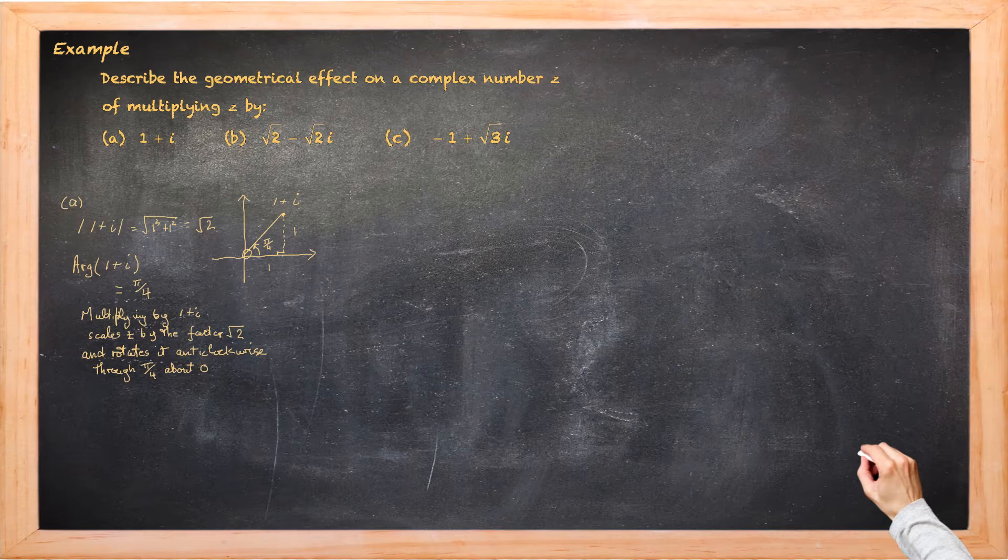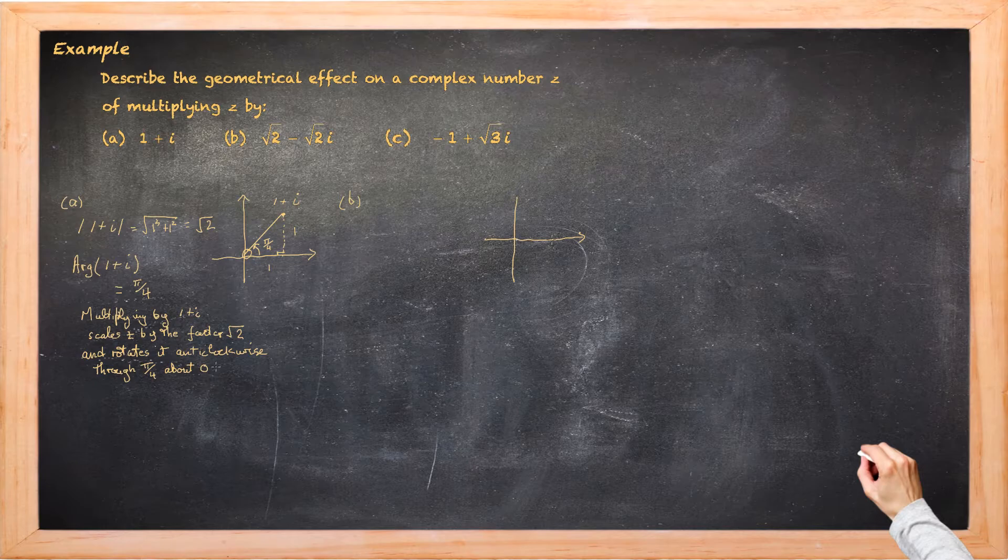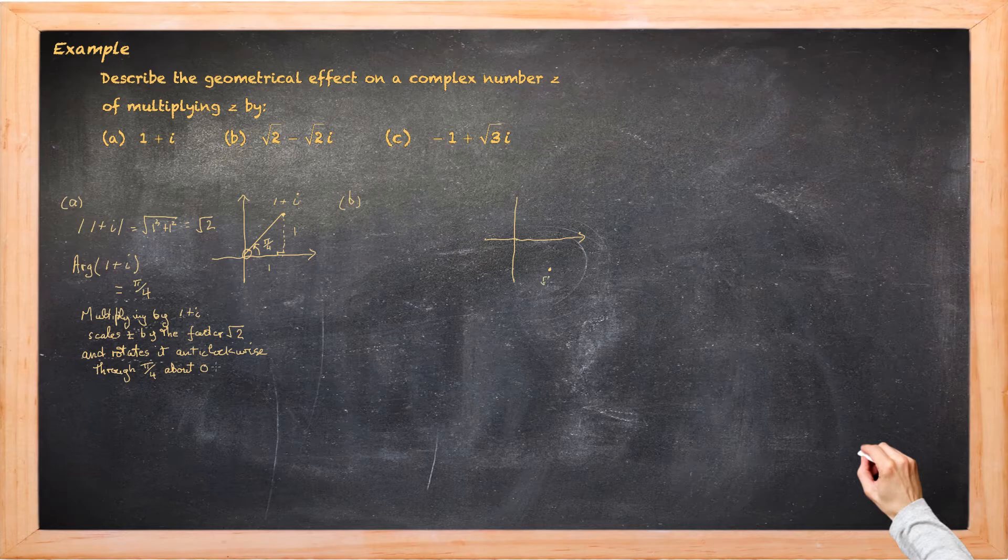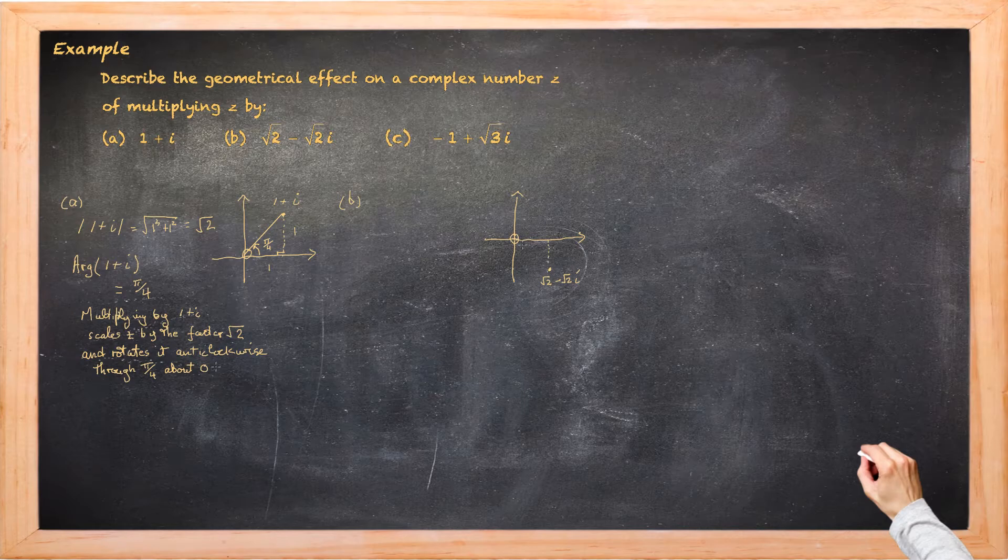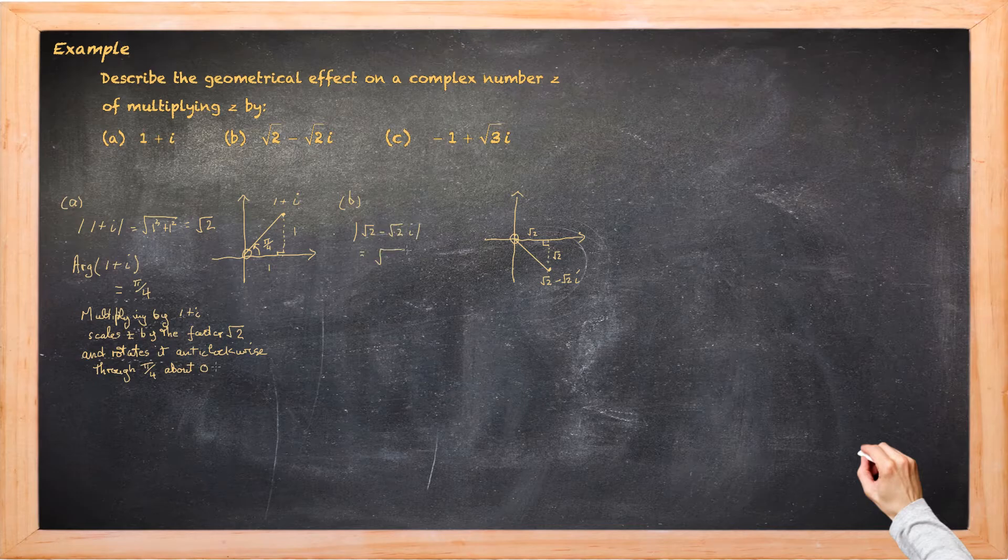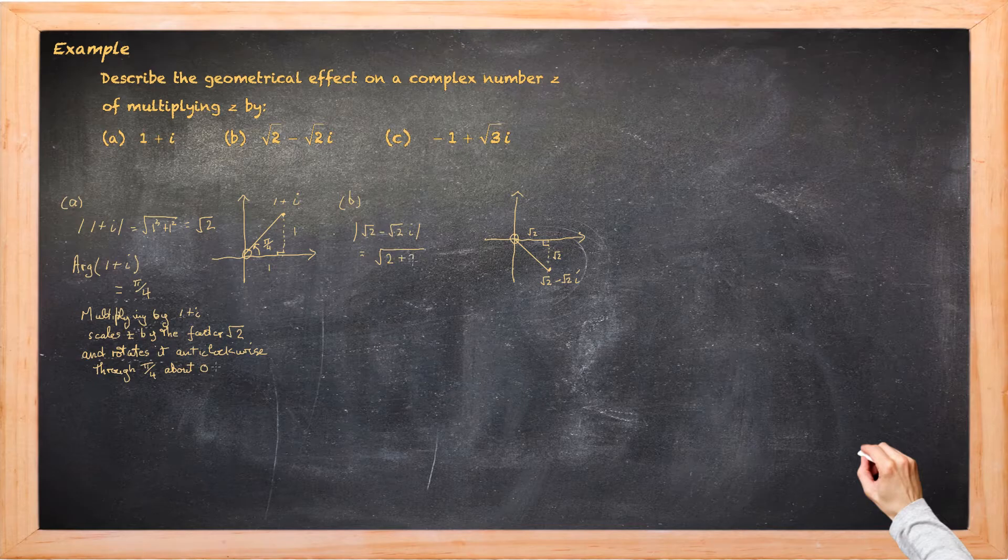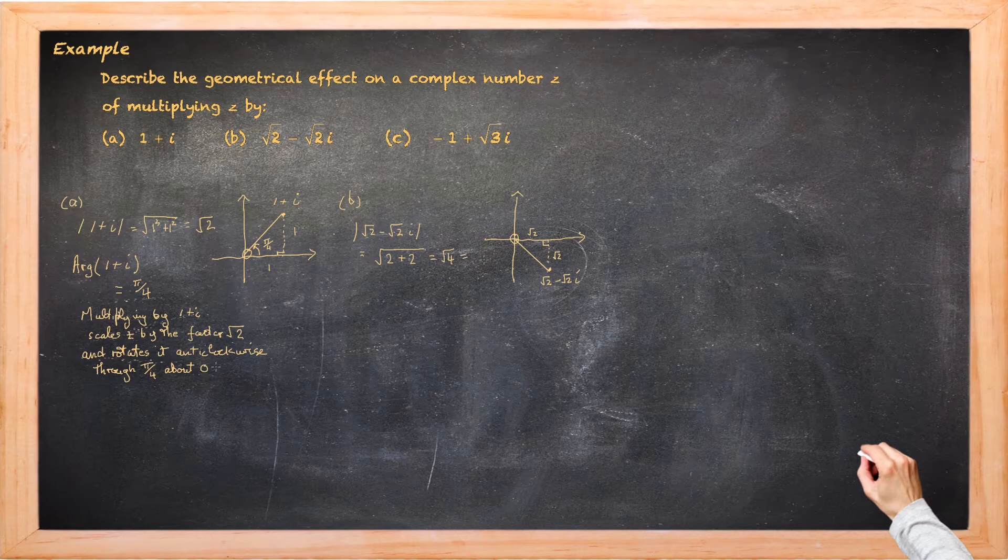So let's now have a look at part B where we're talking about root 2 minus root 2i. And again let's locate it. Always useful to locate these numbers on an argand diagram. There's root 2 minus root 2i. And again we can construct a right angle triangle. We've got two of the sides both being root 2. So the modulus of root 2 minus root 2i is the square root of root 2 squared which is 2 plus the square of negative root 2 which again is 2. So that's square root of 4 which gives us 2 for the modulus.